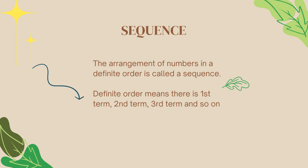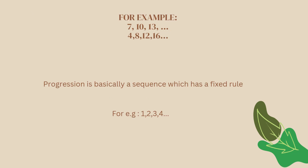Now we are going to be talking about sequence. A sequence basically means the arrangement of numbers in a definite order. The term 'definite order' means there will be a first term, a second term, a third term, and so on. For example, we have the numbers 7, 10, 13, and it keeps going on. That is a sequence. You might also see the term 'progression' — progression is a sequence with a fixed rule or definite order.